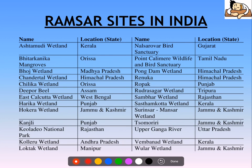Regarding Ramsar sites in India, you have to know this list. For example, Ashtamudi wetland is a Ramsar site located in Kerala. You have to go through this list a couple of times so it sits in your mind — this list is very important to remember.